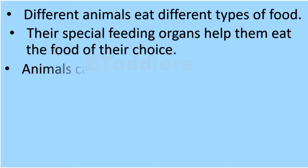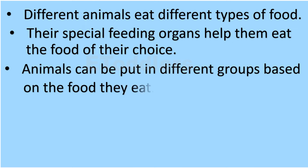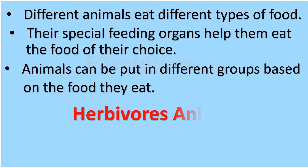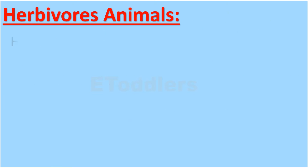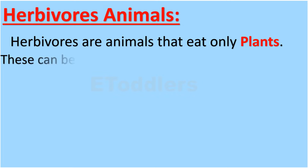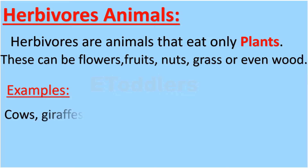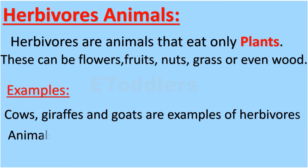Animals can be put in different groups based on the food they eat. Now let's discuss about herbivores' animals. Herbivores are animals that eat only plants. These can be flowers, fruits, nuts, grass, or even wood. Cows, giraffes, and goats are examples of herbivores' animals.